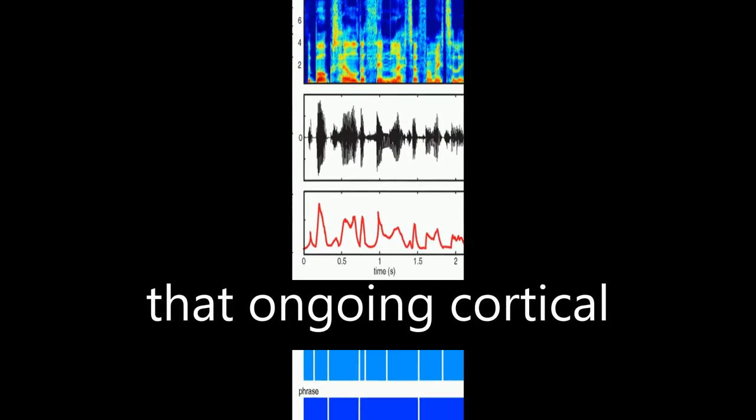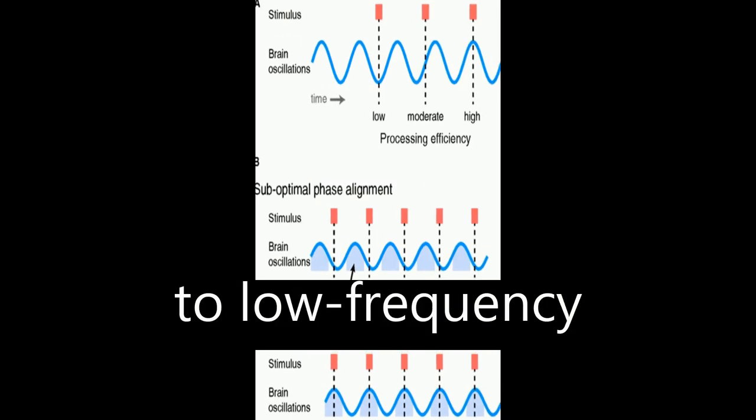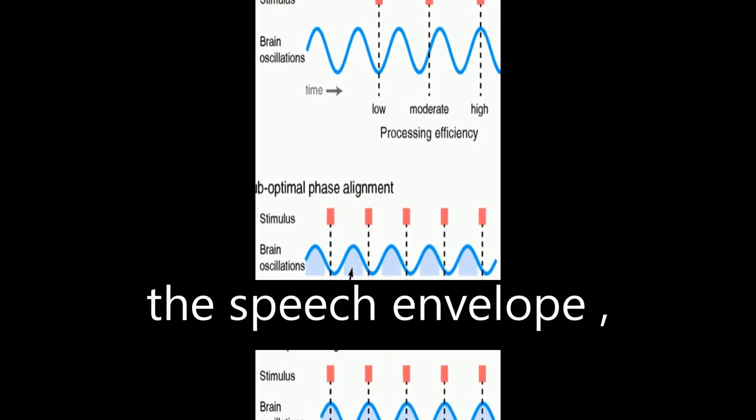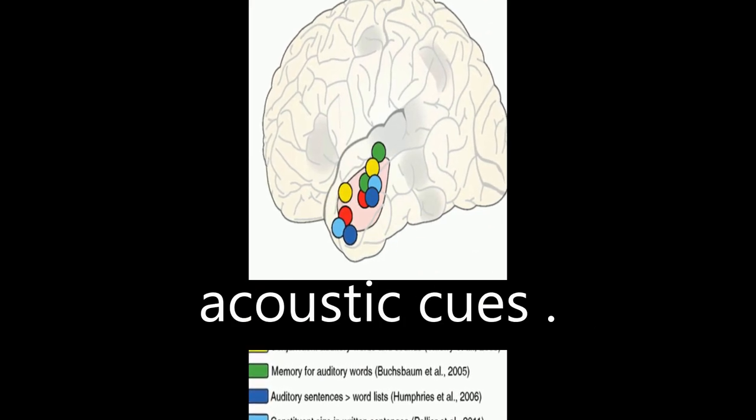Neuroimaging data shows that ongoing cortical oscillations phase lock to low-frequency information, 4 to 8 Hz, in the speech envelope, which helps increase sensitivity to relevant acoustic cues.